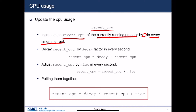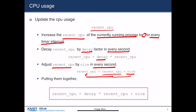So we bring in the concept of decay. Decay decreases the amount of the recent_cpu value by a certain decay factor every second — the decay factor is less than one. We also adjust recent_cpu by nice every second: we add the nice value to recent_cpu and set it to the new value. Putting them all together, recent_cpu is computed as: decay times recent_cpu plus nice, updated every second.